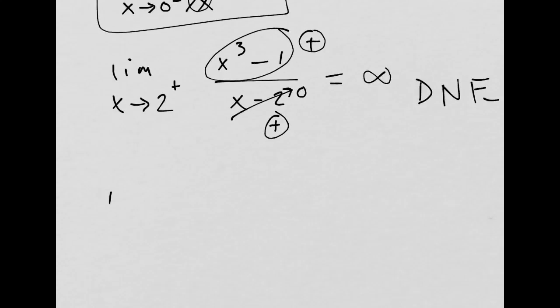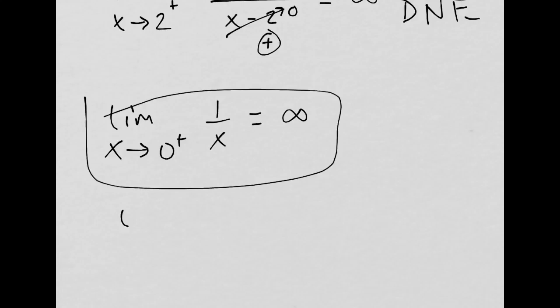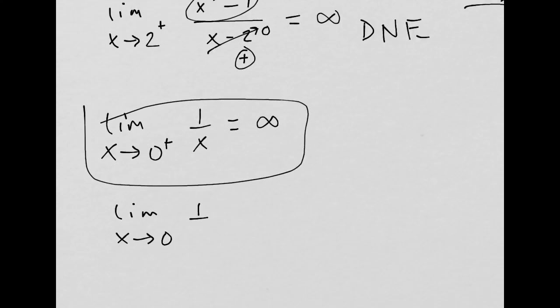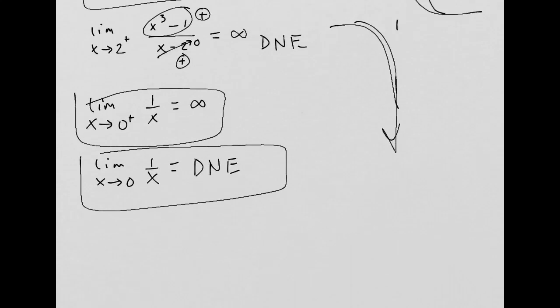The other important limits are: limit as x approaches 0 from the right of 1 over x, that's going to be positive infinity. If I say limit as x approaches 0 from both sides of 1 over x, that does not exist. Strictly does not exist. It doesn't go to positive or negative infinity. Why is that? Because for a two-sided limit to exist, both the left-hand side limit has to agree with the right-hand side. So, those are important.